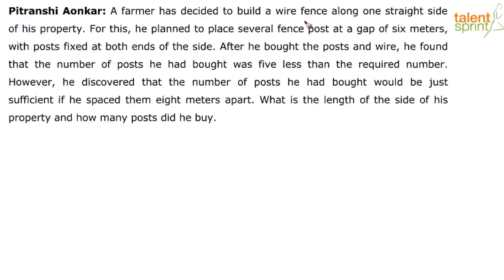A farmer has decided to build a wire fence along one straight side of his property. He planned to place several fence posts at a gap of 6 meters, with posts fixed at both ends of the side. After he bought the posts and wire, he found that the number of posts he had bought was 5 less than the required number. However, he discovered that the posts he had bought would be just sufficient if he spaced them 8 meters apart. What is the length of the side of his property, and how many posts did he buy?